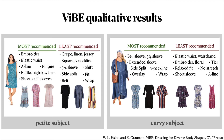Here are example recommendations for two subjects. We show the most and least recommended garments for each subject along with attributes as general advice. Our system recommends embroidery, ruffles, and A-lines for the petite subject to create volume and accentuate her silhouette.